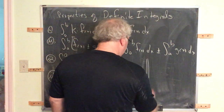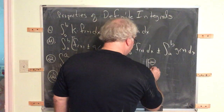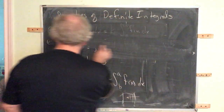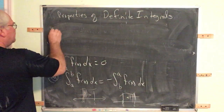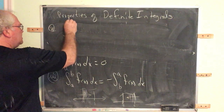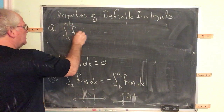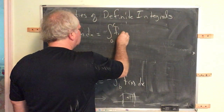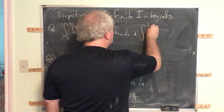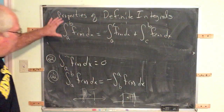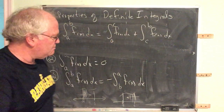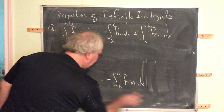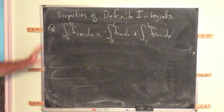The fifth property says: the integral from A to B is equal to the integral from A to C plus the integral from C to B. I'll go back and talk about each of these properties in a little more detail.